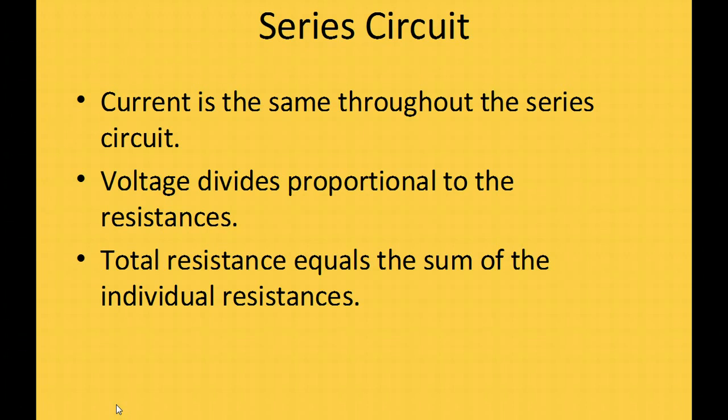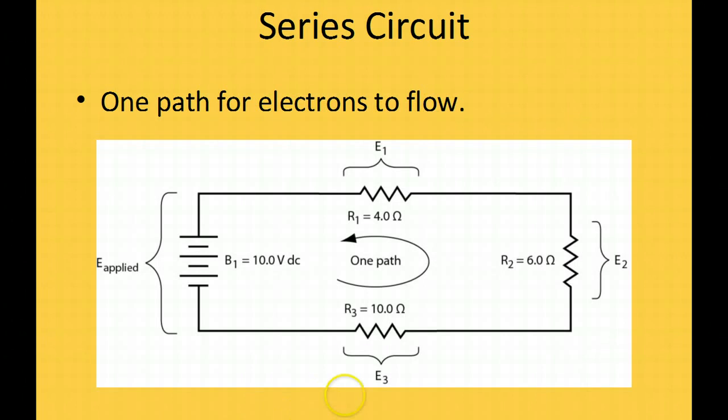The total resistance of the circuit equals the sum of all the resistances in that circuit. So let's take a look. One path for current to flow—this is a DC circuit, so the current flows in this direction through this resistor, this resistor, and this resistor back to the power supply. If you measure the current at each one of these points, you would find that the current is always the same, no matter what point in the circuit you measure it.